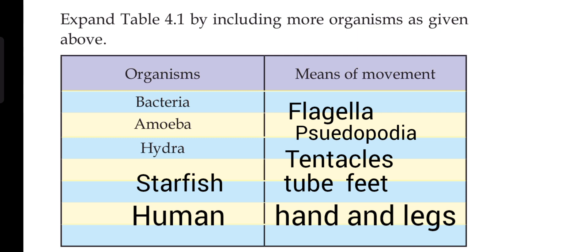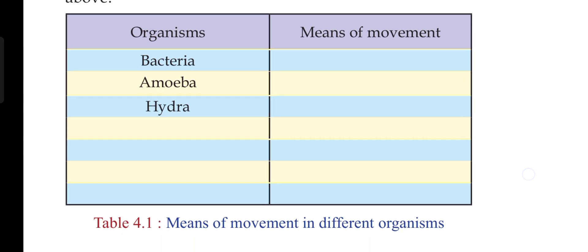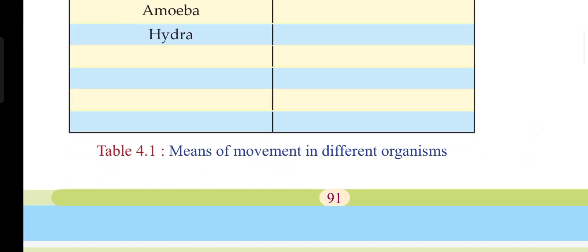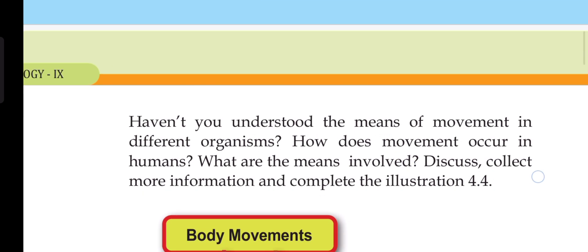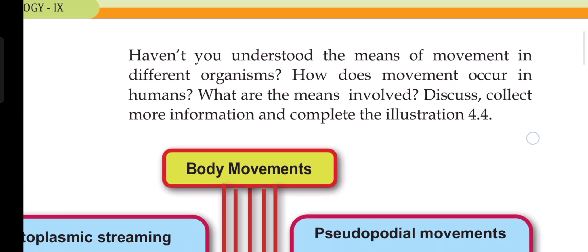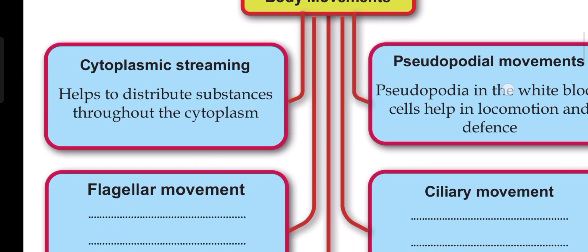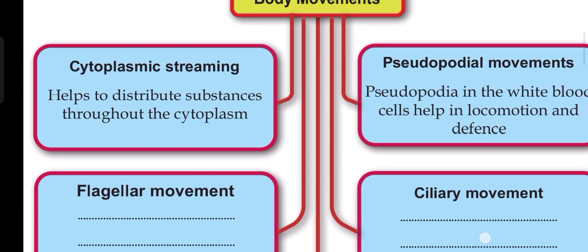The movements available for humans include legs and hands. In terms of cellular movement, our body uses cytoplasmic streaming, pseudopodial movement, flagellar movement, ciliary movement, and muscular movement.